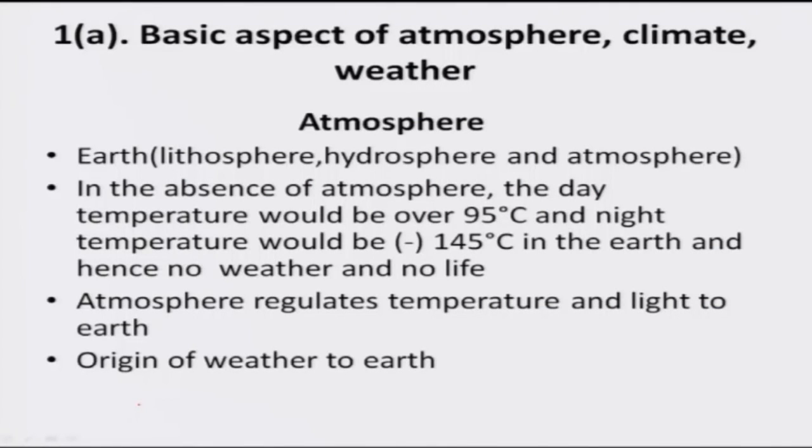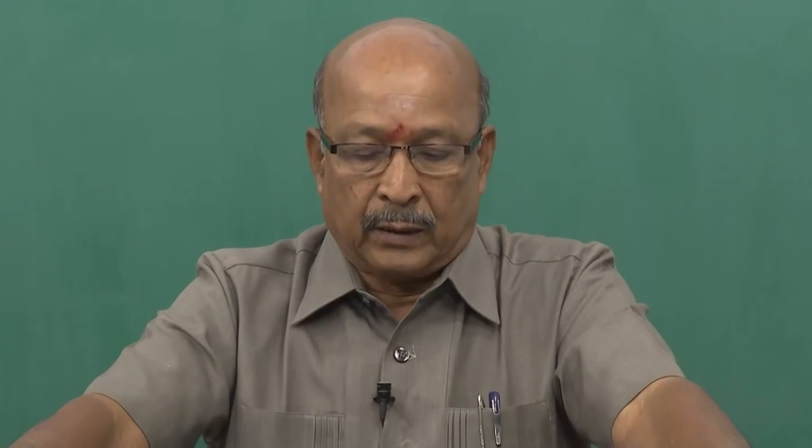There is no life because the gaseous component that envelopes our atmosphere extends up to a depth of 10,000 kilometers. It is a gaseous component that regulates the radiation, energy, and light reaching your earth. It is an intermittent interface layer between your sun and your earth. If there is no atmosphere, in the day the temperature would go up to 95 degrees centigrade. Similarly, after all outgoing radiation, the night temperature would fall to minus 148 degrees centigrade. Hence, there is no life. The presence of atmosphere is very, very important.